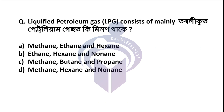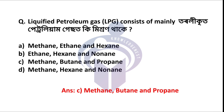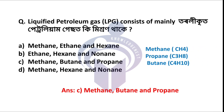Next question: Liquefied Petroleum Gas (LPG) consists mainly of what? LPG is a fuel gas which contains a flammable mixture of hydrocarbon gases. The correct answer is option C: methane, butane, and propane. These are hydrocarbons made of hydrogen and carbon — methane (CH4), propane (C3H8), and butane (C4H10).